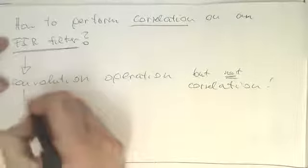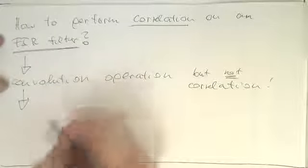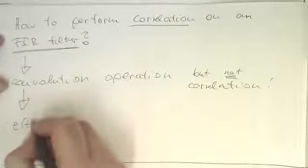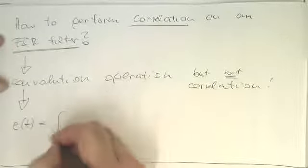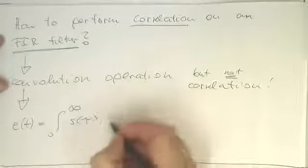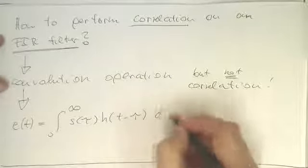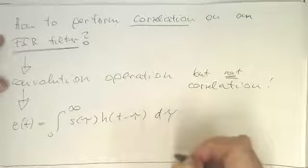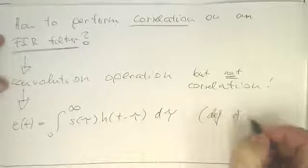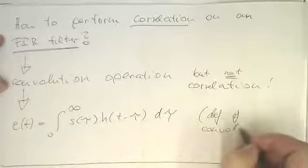So what was convolution again? So the definition of convolution was E(t) as from zero to infinity, and then S(tau) H(t minus tau) d tau. So this was the definition of convolution.